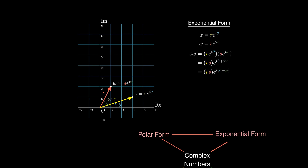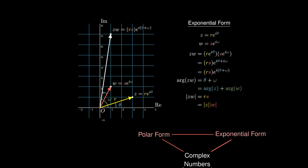This tells us that the argument of zw is θ + ω — we just add the arguments to get the argument of the new complex number. Furthermore, the modulus of zw is rs, the product of the individual moduli, meaning we stretch the complex number by the modulus of the other. This is the geometric representation of complex number multiplication.